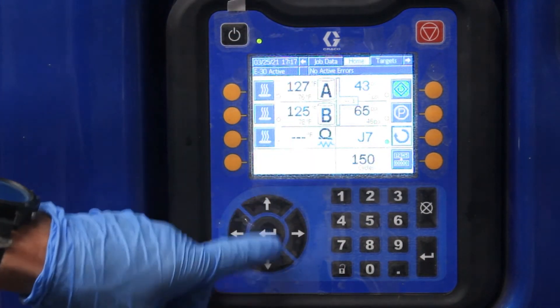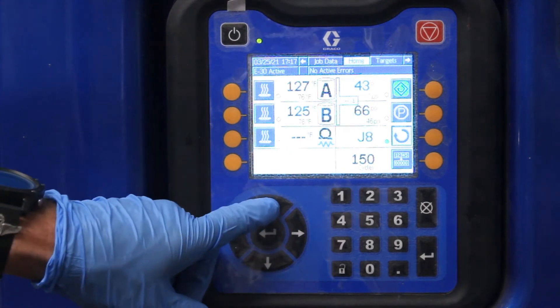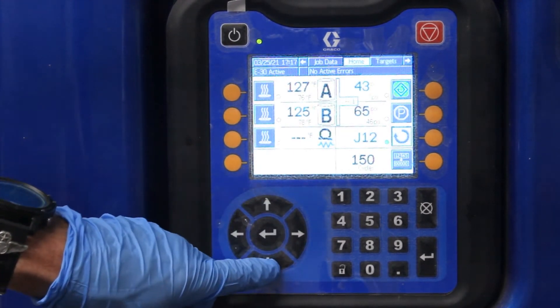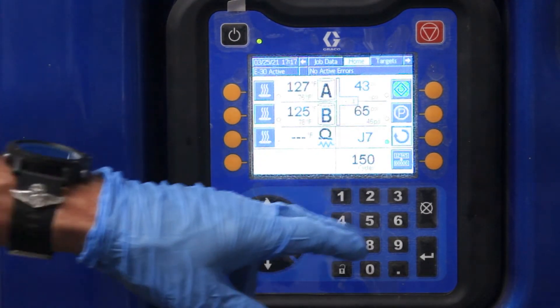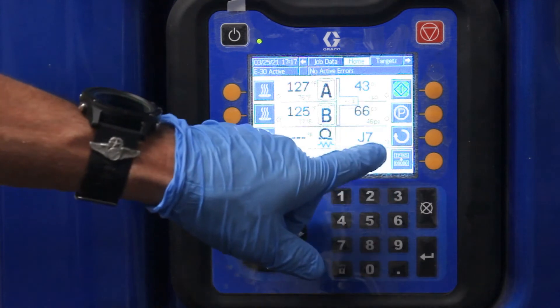So if I want to go up, I use the up button or down button. I can go up to 20, or I can go down. Once the material is up to temperature, push that button, it turns it off.